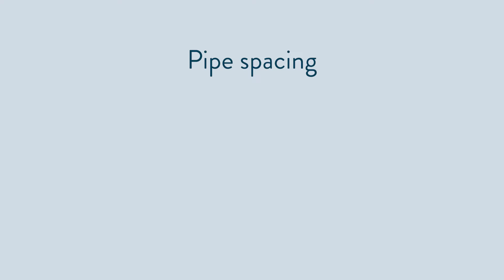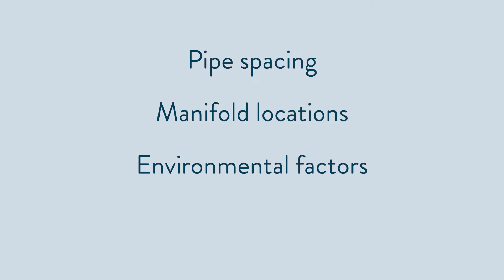When NewHeat designs a system, we take into account anything and everything that can affect the performance in each room, including pipe spacing, manifold locations and environmental factors. We even make sure we know the floor coverings in every room, as they will also impact the performance of the system and need to be accounted for in the design to ensure performance is optimised.